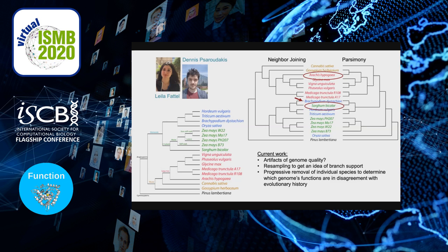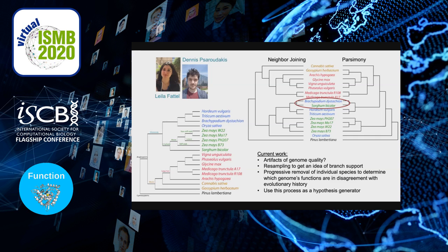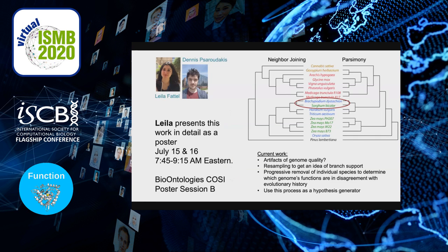We're currently investigating whether these differences are artifacts of genome quality, doing resampling for branch support and progressively removing individual species to find which genomes are in disagreement with evolutionary history. Early analyses point at Brachypodium, which has a tiny genome, and Medicago, which has unique biology among legumes. We're also imagining using this process as a hypothesis generator — for instance, if Brachypodium and sorghum share a disease, their functional similarity might tell us how those plants respond to hosting that pest. Layla presents this work as a poster on July 15th–16th at the BioOntologies COSI poster session B.